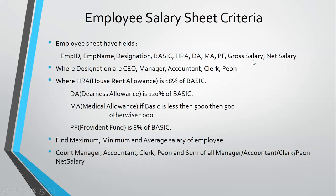Designations include CEO, Manager, Accountant, Clerk, and Peon. HRA (House Rent Allowance) is 80% of basic. DA (Dearness Allowance) is 120% of basic. MA (Medical Allowance) is 500 rupees if basic is less than 5000, otherwise 1100 rupees.